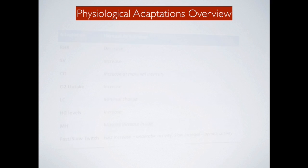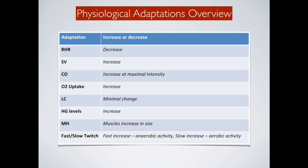A quick overview of physiological adaptations: resting heart rate decreases as a result of training; stroke volume increases; cardiac output increases when training at maximal intensity — a highly trained athlete will have a much higher cardiac output than an untrained athlete at maximal intensity; oxygen uptake increases; lung capacity shows minimal change between untrained and trained athletes; haemoglobin levels increase; muscle hypertrophy occurs, particularly with resistance training; and fast twitch fibres improve with anaerobic activity while slow twitch fibres develop with aerobic activity.